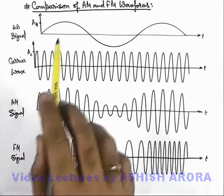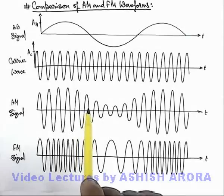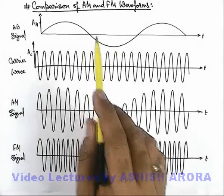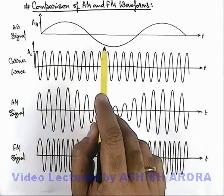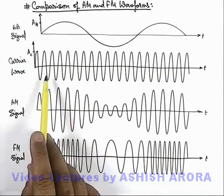Let us now discuss about the comparison of AM and FM waveforms. Here you can see, the first picture is of the low frequency baseband signal, the second one is a carrier wave.